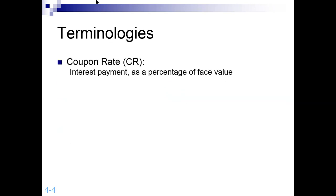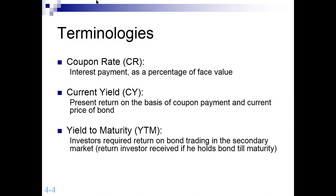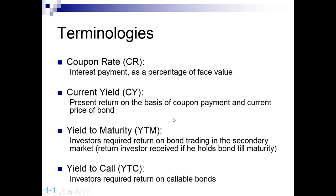The coupon rate is the interest payment as a percentage of face value. Current yield is the present return based on coupon payment and current price of the bond. YTM, or yield to maturity, is the investor's required rate on a bond trading in the secondary market. This is one of the most important terms in the entire chapter — the concepts of coupon rate and yield to maturity must be very clear. If you have any confusion after this lecture, put it in the comments.